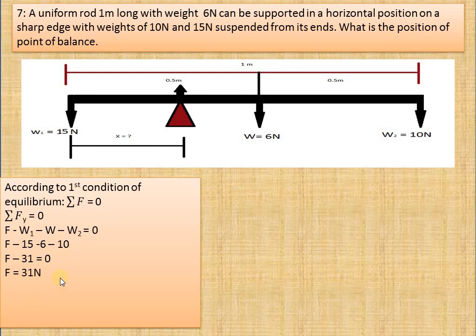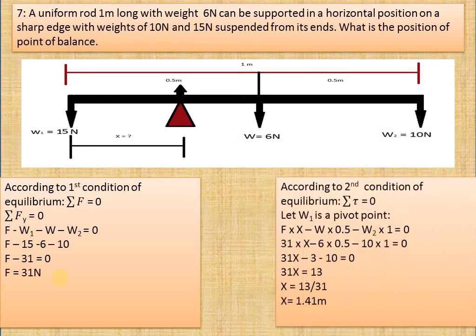Now we don't need the balancing force — we basically need its position. For its position we use the second condition of equilibrium: according to the second condition of equilibrium, the sum of all the torques acting on a body equals zero.